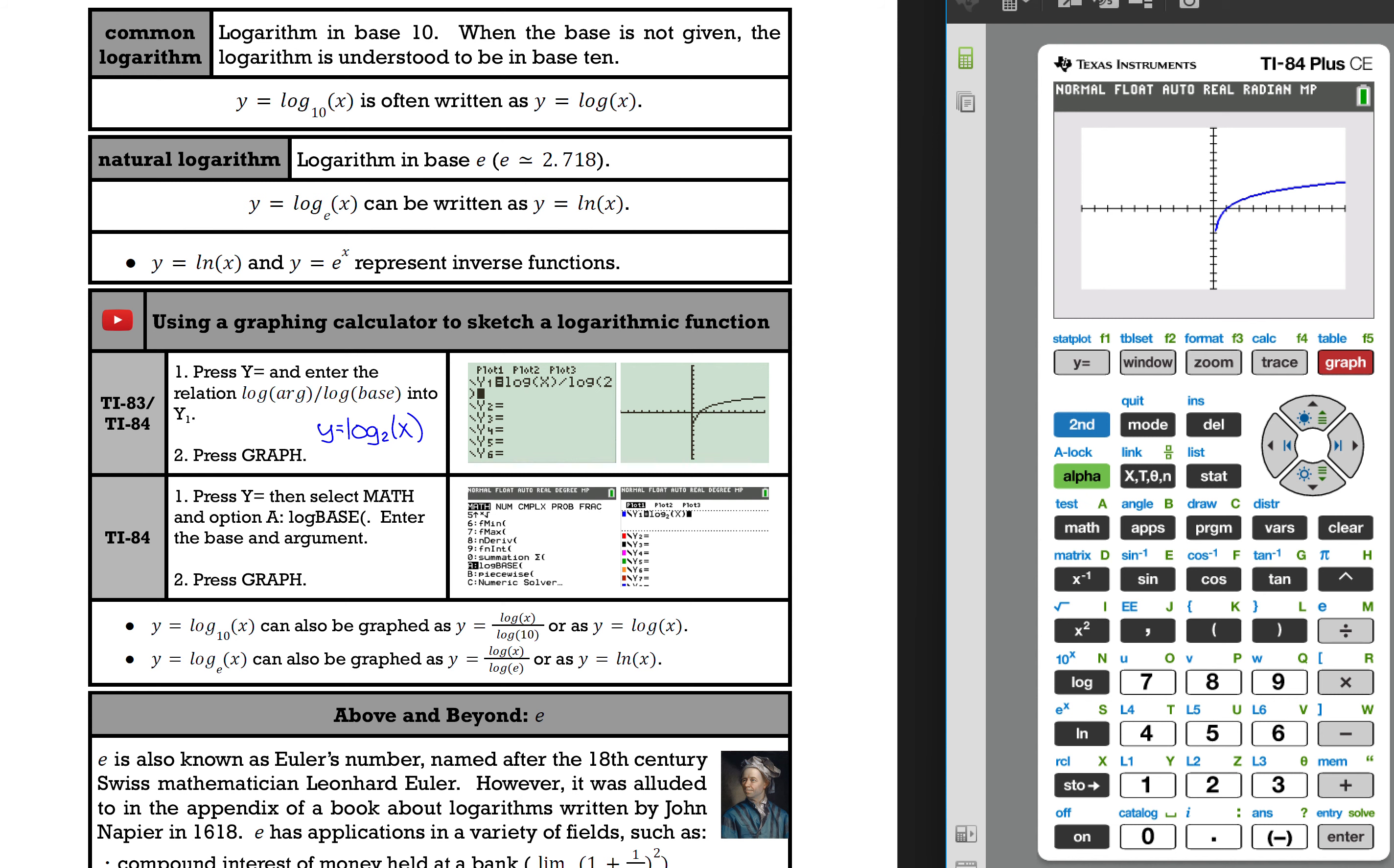Now you do have another option here if you have a TI-84 calculator. You don't need to deal with the change of base identity. I can go back to y equals and select math and go to option A, and then push enter.